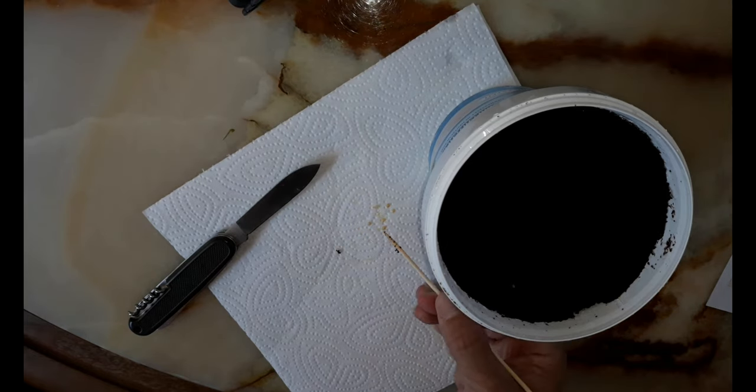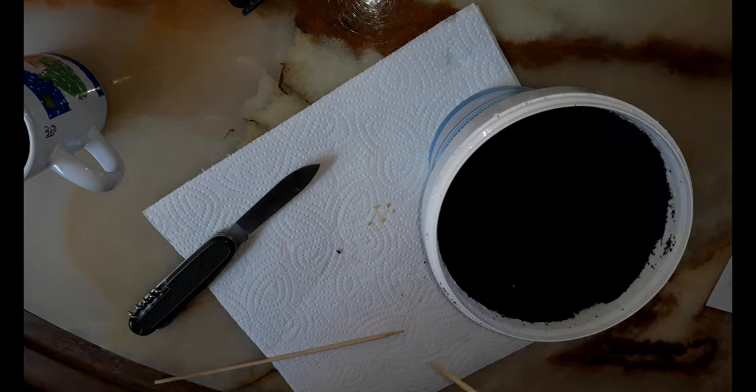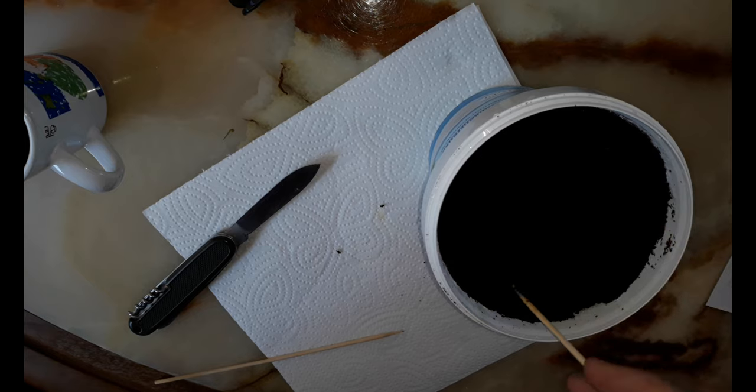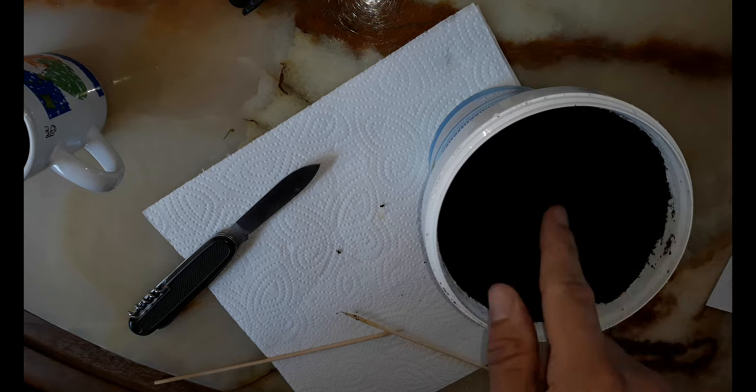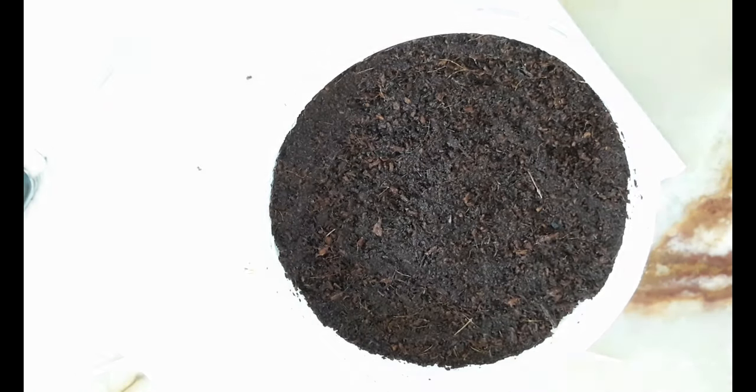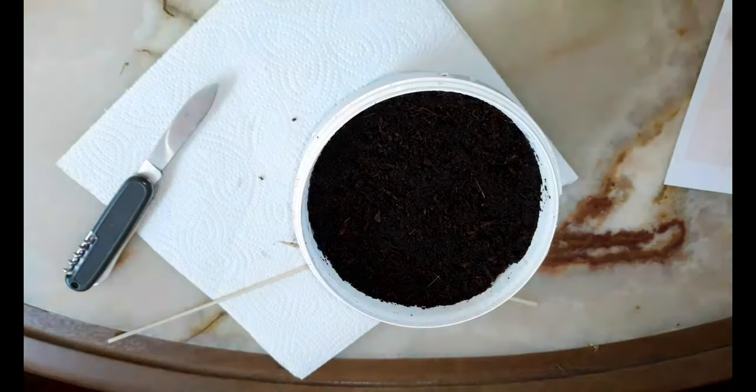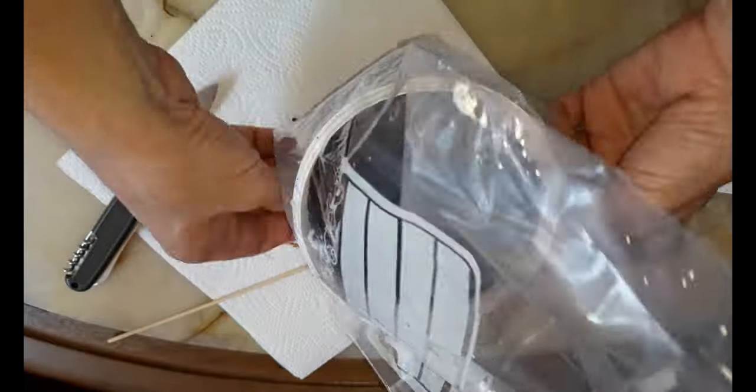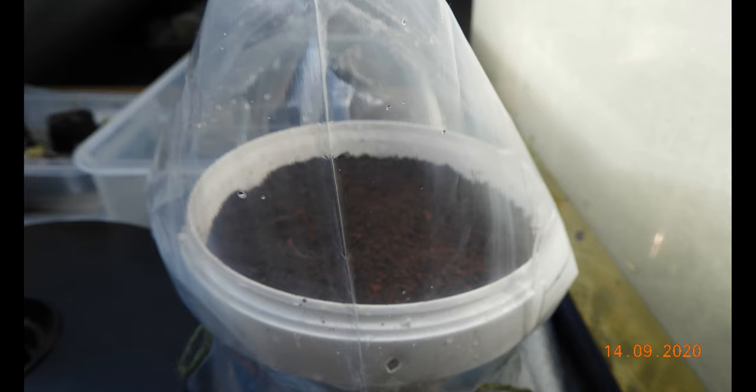For immediate seeding I have prepared this old yogurt container with a tomato soil mix. And on top there is a layer of cocoa fiber for the seeds to germinate in. And the roots can then reach the nutrient-rich soil. A little bit of watering down. And an old plastic bag to keep the moisture and warmth in.